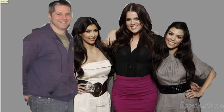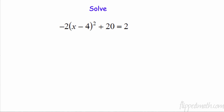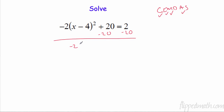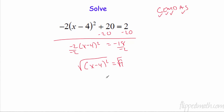For the last one, we're going to solve by undoing — remember GEMDAS in reverse. We have add 20, multiply by negative 2, an exponent, and grouping. Subtract 20 from both sides: negative 2 times (x − 4)² equals negative 18. Divide both sides by negative 2: (x − 4)² equals 9. Take the square root of both sides: x minus 4 equals positive or negative 3. Add 4 to both sides: x equals 7 or x equals 1.